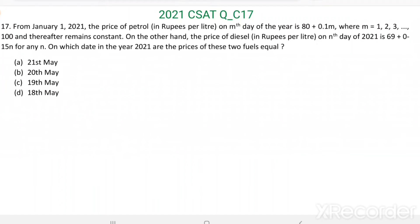Question number 17. From January 1st 2021, the price of petrol in rupees per litre on the mth day of the year is 80 plus 0.1m, where m equals 1, 2, 3 up to 100, and thereafter remains constant. On the other hand, the price of diesel in rupees per litre on the nth day of 2021 is 69 plus 0.15n, for any n. On which date in the year 2021 are the prices of these two fuels equal?